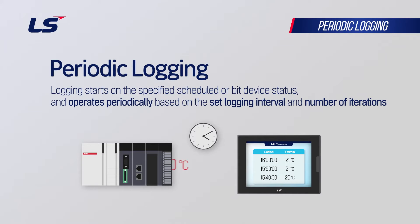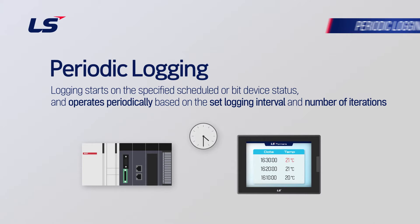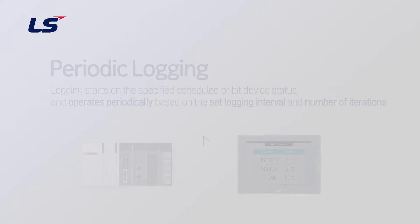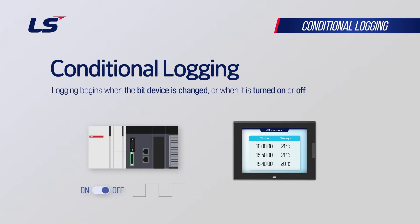Periodic logging performs logging at a specified number of times at a set time by the user, or when the bit device is on or off. Conditional logging performs one logging action when the bit device you set is on, off, or changed.